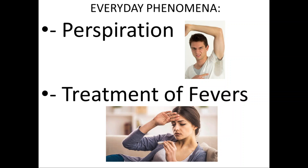Another everyday application is the treatment of fevers. An old-fashioned treatment involves taking rubbing alcohol, applying it to the person, and pointing a fan toward them. Rubbing alcohol is less dense than water, so it evaporates quicker and has a greater rate of evaporation — the faster it evaporates, the faster it cools the body. The fan increases wind velocity, adding even more to the rate of evaporation of the rubbing alcohol, so you cool down the person's body quickly and lower their fever.